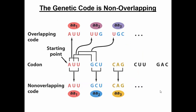Let's talk about some more properties of the genetic code. The genetic code is said to be non-overlapping. What we mean by this is that every three letters encode for a given amino acid, and then the next three letters encode for the next amino acid — there's no overlapping between the codons. Here we have our RNA sequence: here's one codon, here's another codon, here's another codon. This bottom portion is the correct way the genetic code reads: A-U-U will encode for the first amino acid, then we're done with those three letters; the next three letters, G-C-U, encode for the next amino acid, and so on.